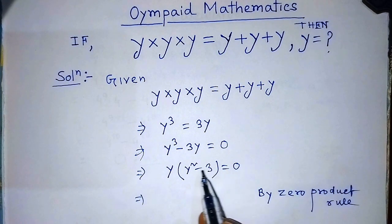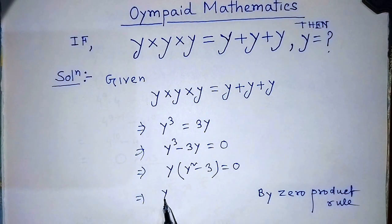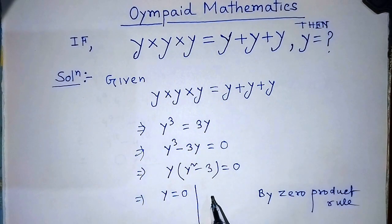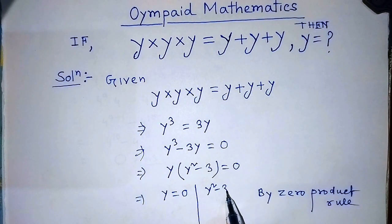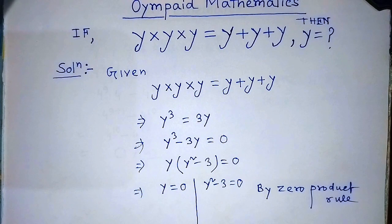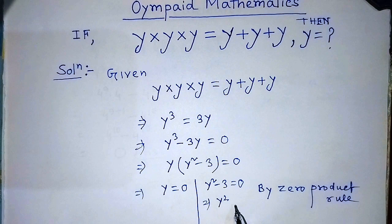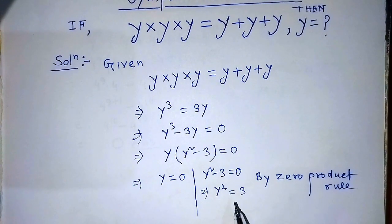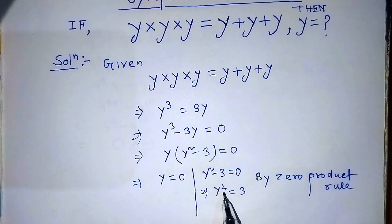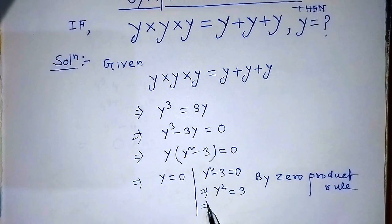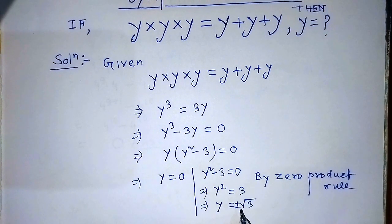By the zero product rule, we can write from this equation: y is equal to 0, and y squared minus 3 is equal to 0. From y squared minus 3 equals 0, we get y squared is equal to 3. Transposing the power, y is equal to plus or minus the square root of 3.